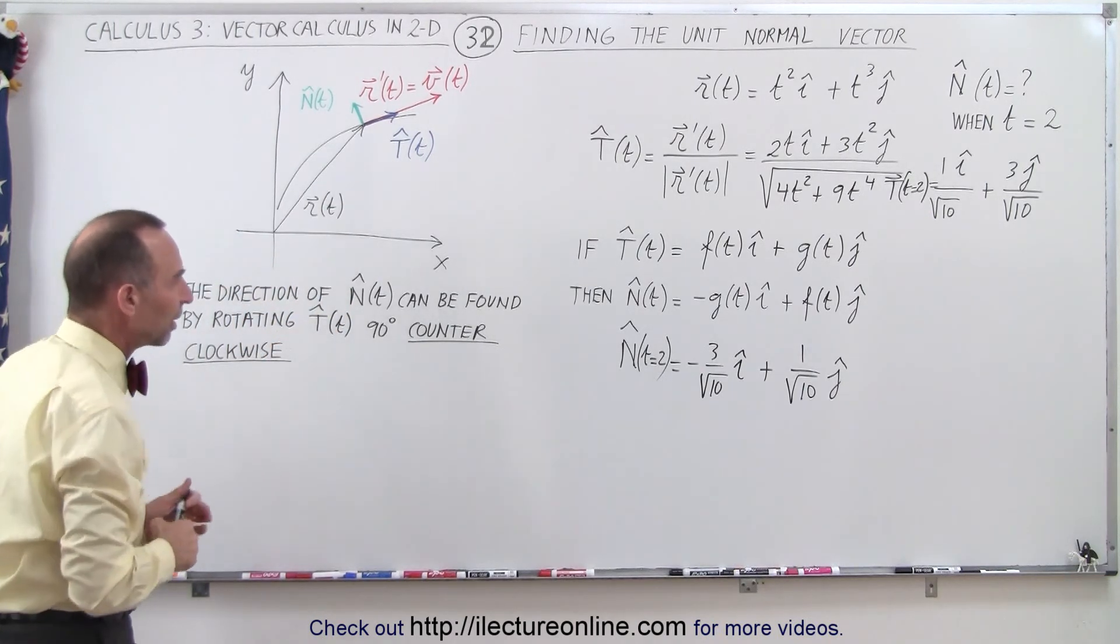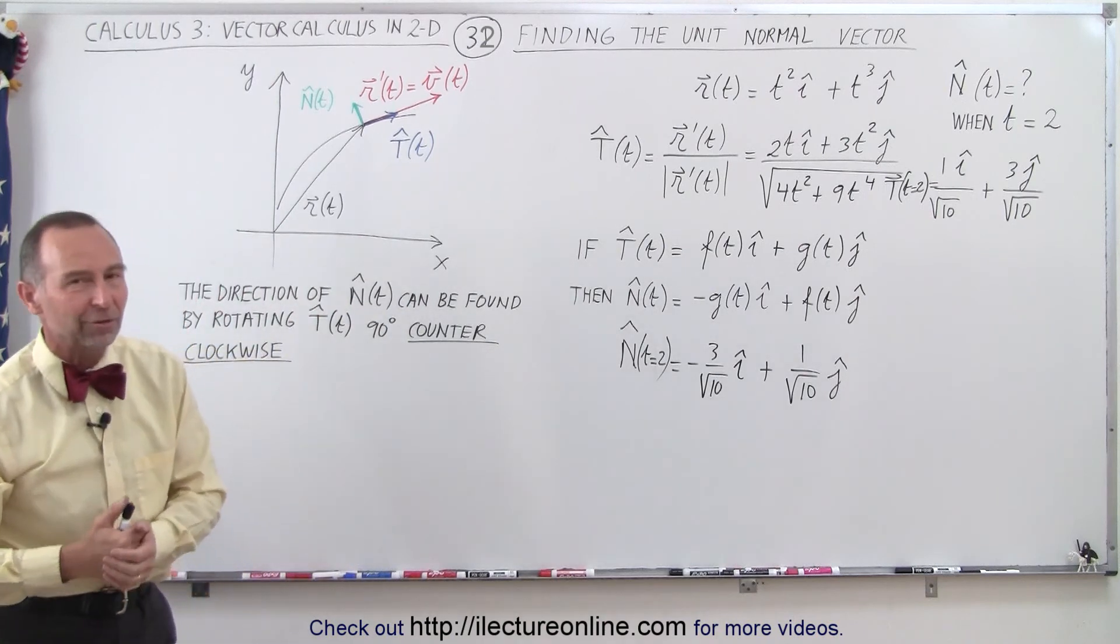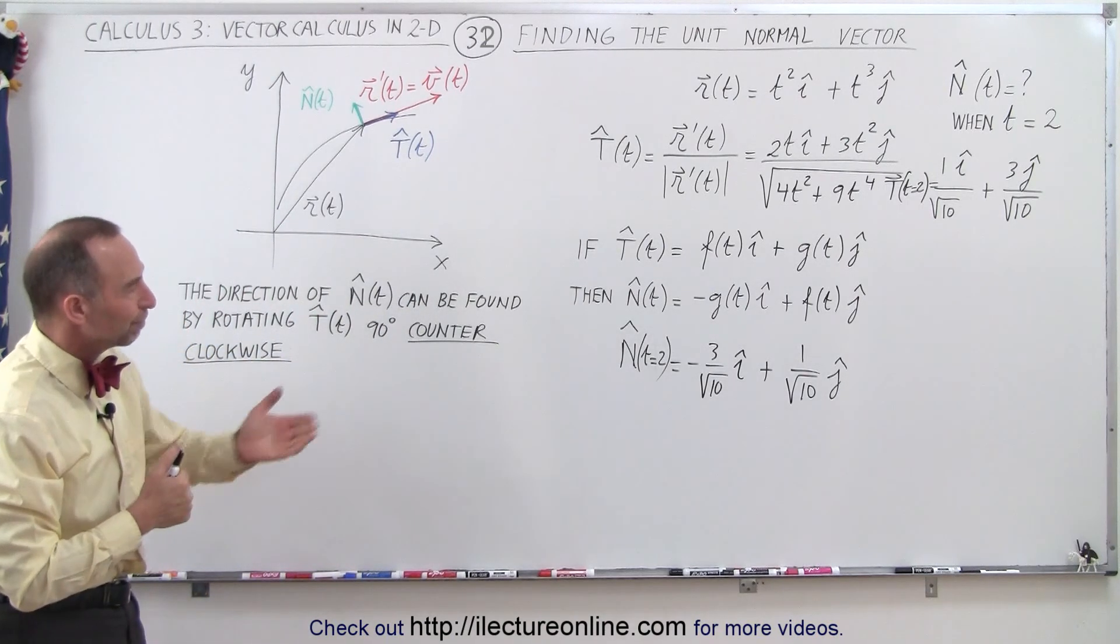So this is how you find the direction and the components of the unit normal vector. And that's how it's done.